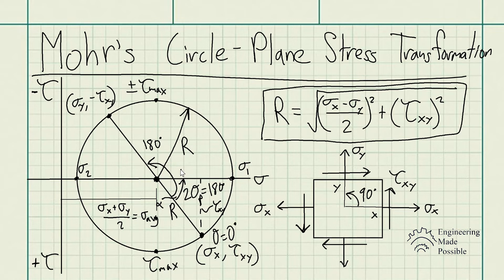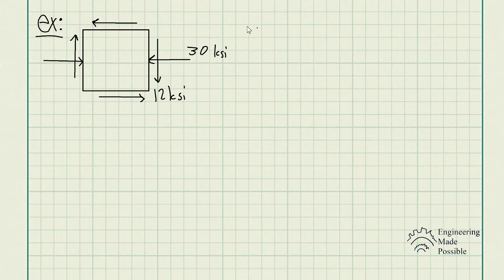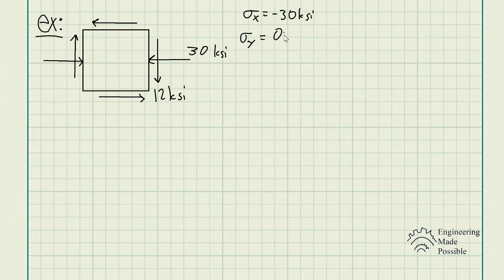Let's do a problem to further understand this concept. The state of stress at a point is shown on the element. Determine: (a) the principal stresses and (b) the maximum in-plane shear stress and average normal stress, using Mohr's circle. We have a compressive stress of 30 ksi and a negative shear stress of 12 ksi, so sigma x = -30 ksi, sigma y = 0, and tau xy = -12 ksi.